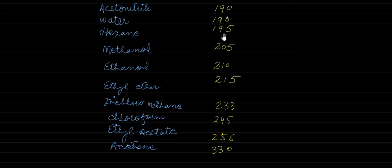Hexane has a cut-off wavelength of 195, methanol 205 nanometers, ethanol can be used above 210 nanometers, ethyl ether can be used above 215 nanometers, and similarly there are other solvents as well.